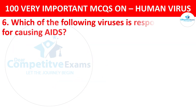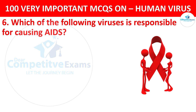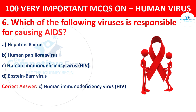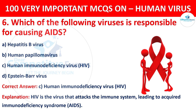Question 6. Which of the following viruses is responsible for causing AIDS? Your options are Hepatitis B virus, Human Papilloma virus, Human Immunodeficiency Virus (HIV), or Epstein-Barr virus. The correct answer is C, that is HIV. HIV is the virus that attacks the immune system, leading to Acquired Immunodeficiency Syndrome, known as AIDS.